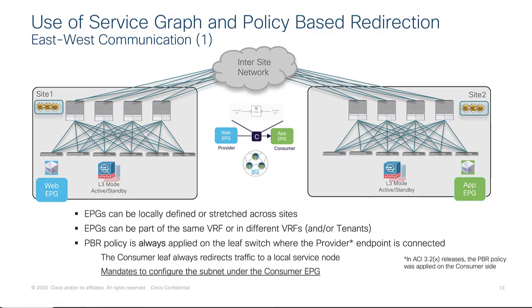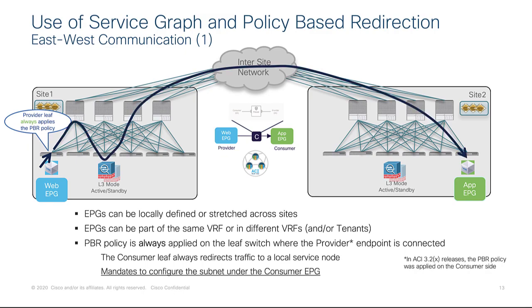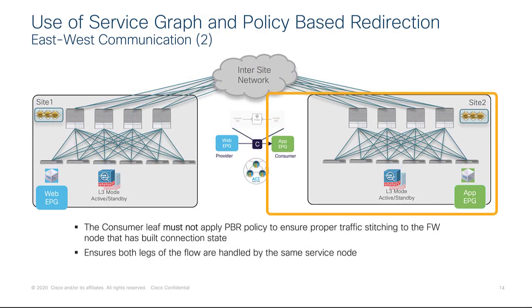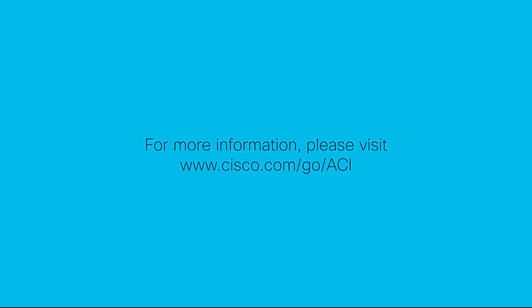To drive that point home: the provider leaf is always the leaf that applies the PBR policy. Whether the provider or consumer initiates traffic, PBR sends it to the provider leaf, which redirects to the local firewall and then forwards appropriately. If the consumer initiates the conversation, PBR sends it over and the provider leaf always applies the policy, redirecting to the appropriate local firewall and then to the provider. That concludes the demonstration. Thank you very much.